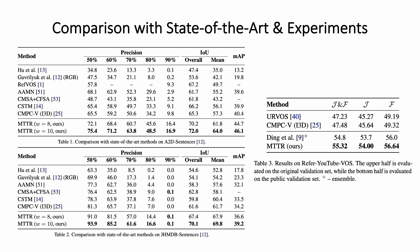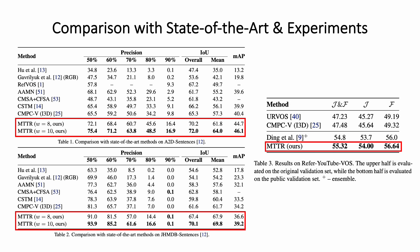To evaluate our approach, we conduct experiments on three RVOS benchmark datasets. On A2D Sentences and JHMDB Sentences, the two most popular RVOS benchmarks, MTTR significantly outperforms existing methods across all metrics. Additionally, MTTR also delivers strong results on Refer YouTube VOS, a newer, larger, and more challenging RVOS dataset.